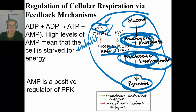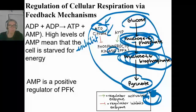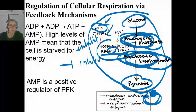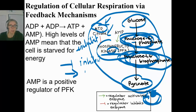Citrate is a molecule that you make in the Krebs cycle. If you have plenty of citrate, it will also come back and inhibit this same enzyme. On the other hand, AMP does the opposite. Remember, a line with a bar means to stop or to inhibit, while an arrow means to go or to activate.